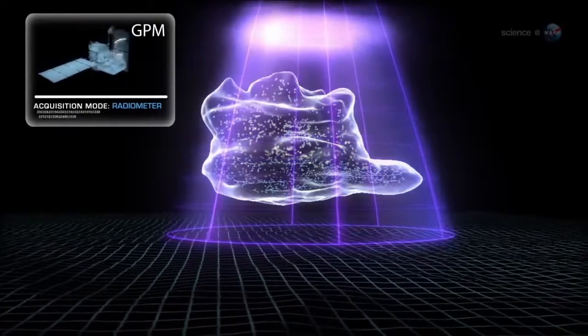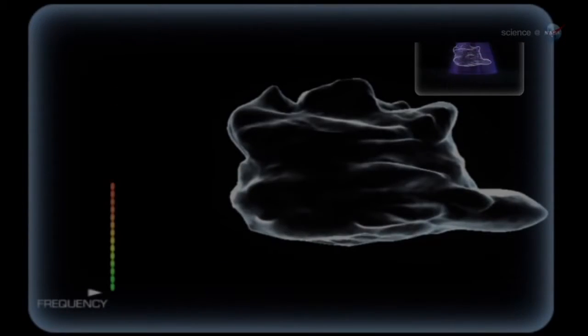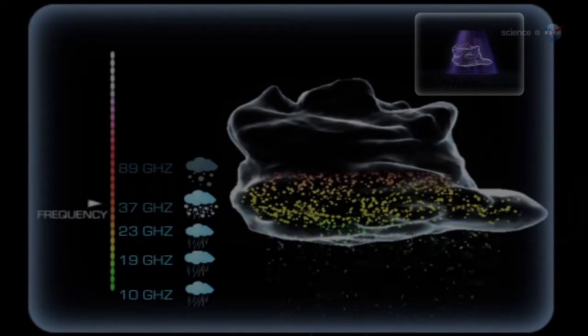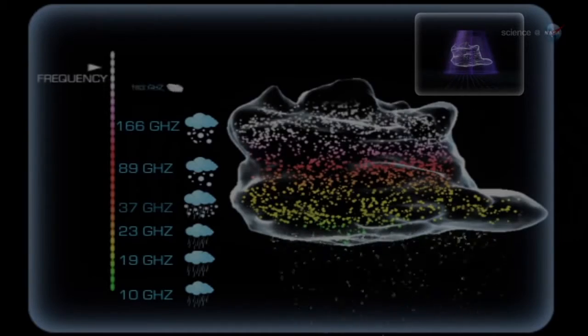The Microwave Imager will measure not only heavy and moderate rain, as other satellites do, but also light rain and snow—two forms of precipitation important over mountain ranges and high-latitude sites in North America, Europe, and Asia.